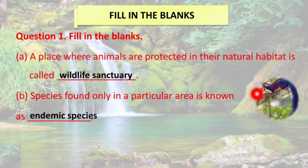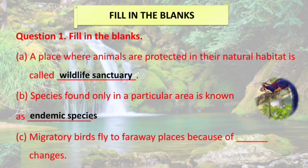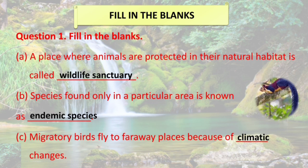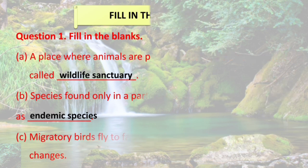Giant squirrel is an example of the endemic species of Pachmari Biosphere region. Next one: migratory birds fly to far away places because of climatic changes. Migratory birds migrate from one place to another because it is very cold and they cannot survive in such regions, so they go to a warm place. This is the reason — climatic change.